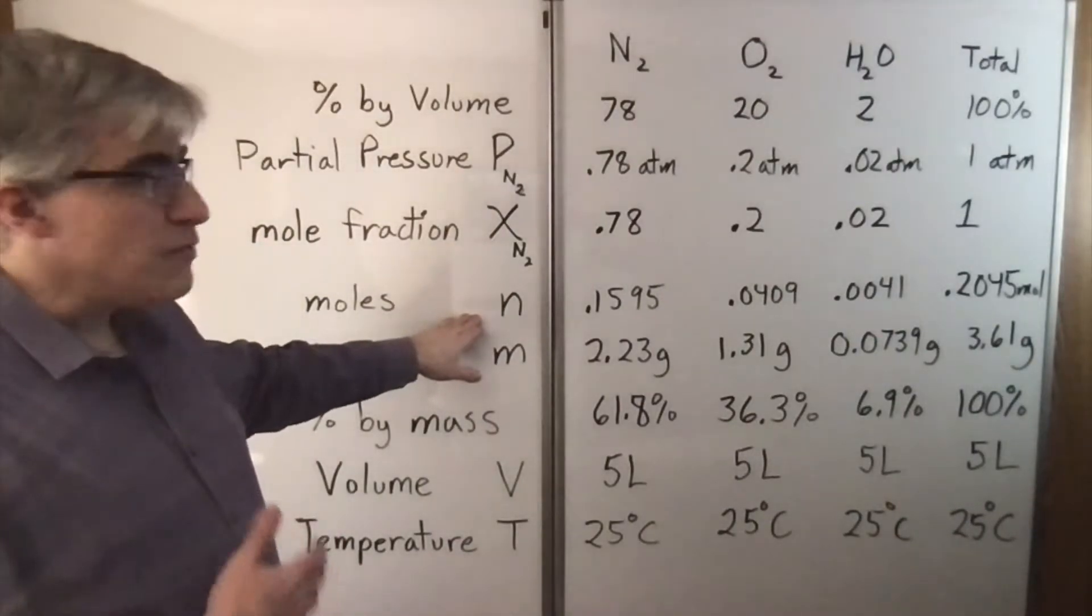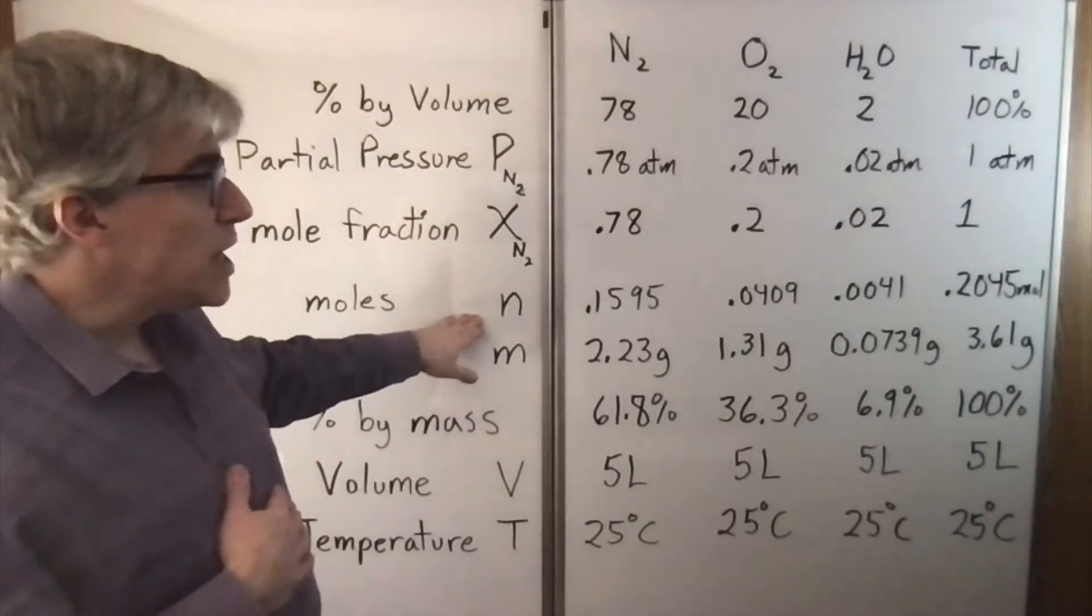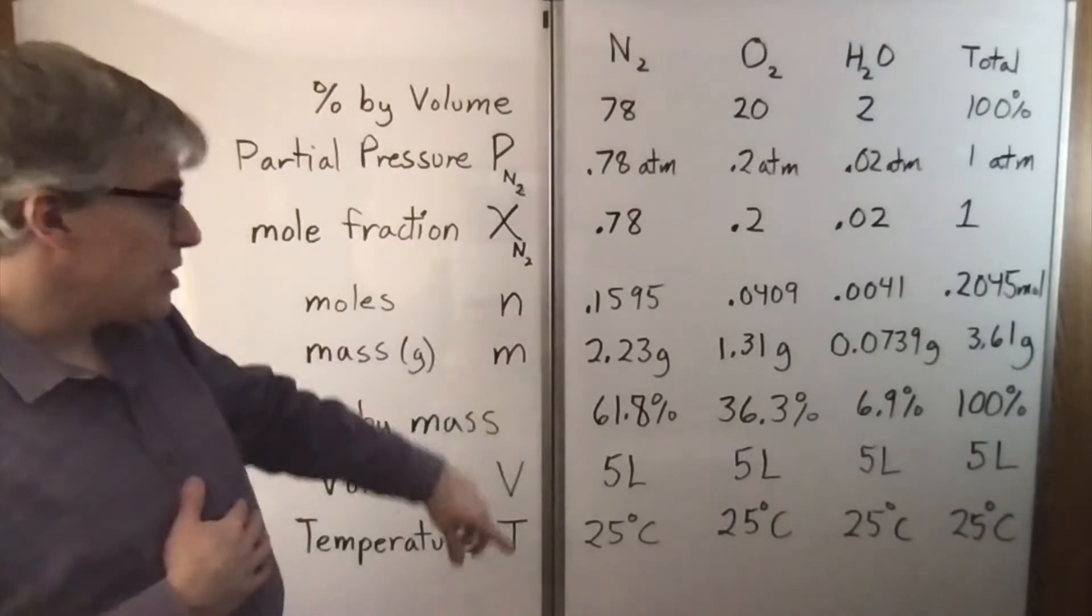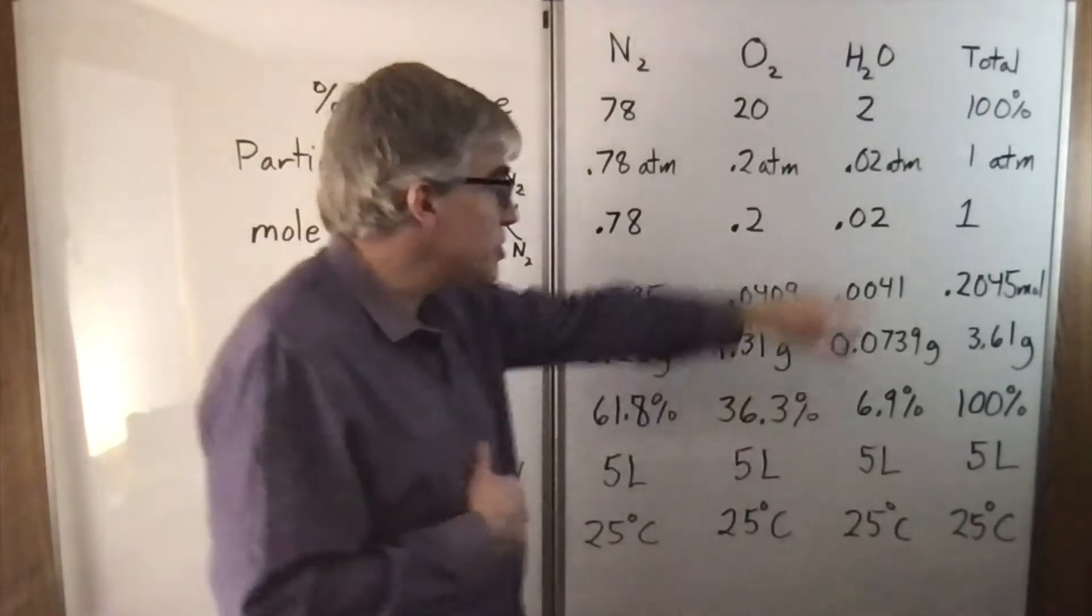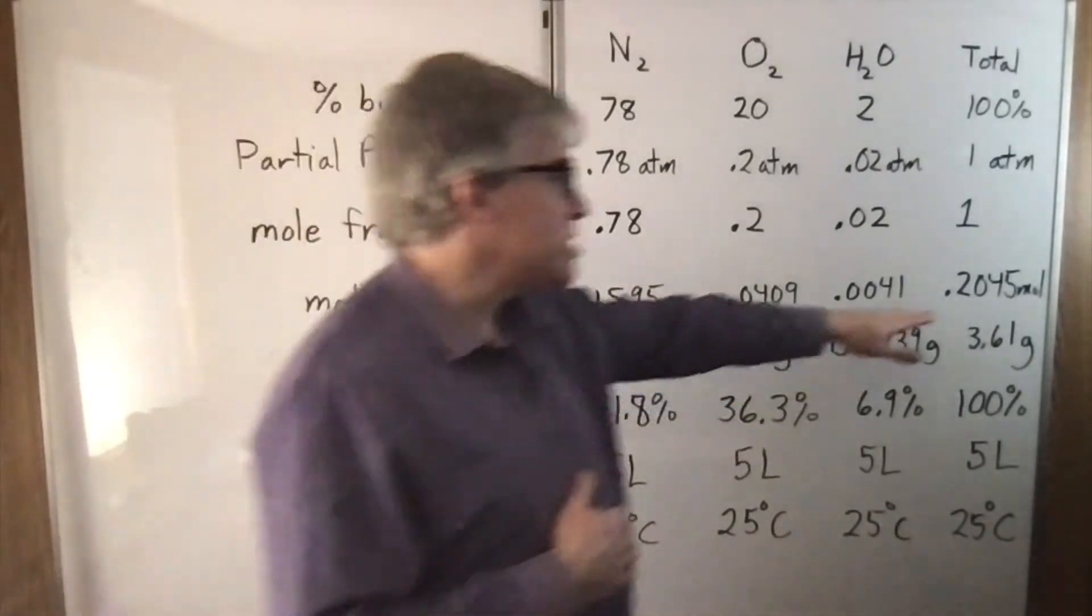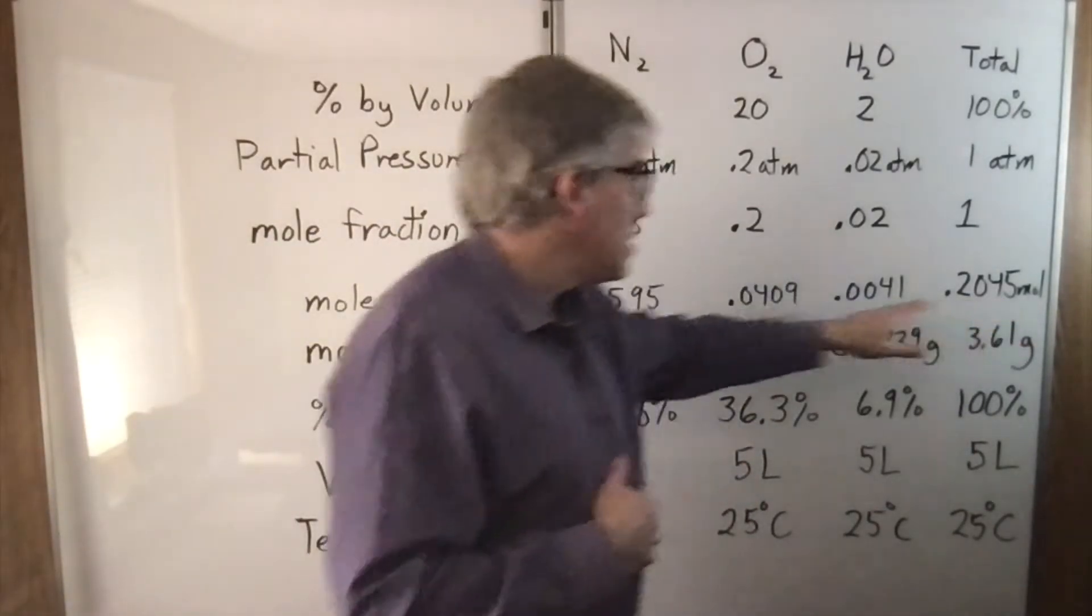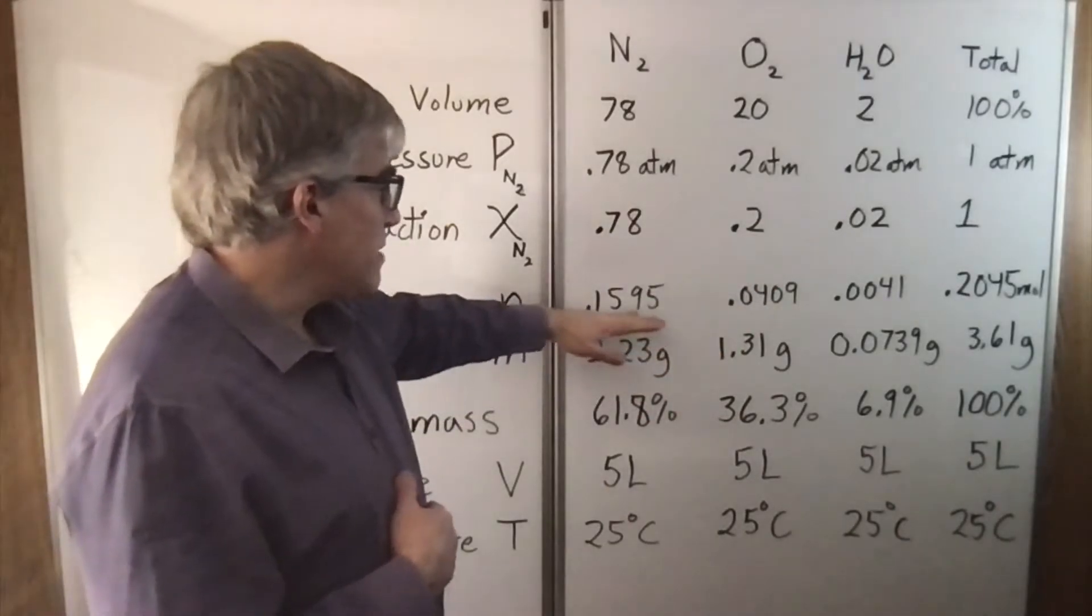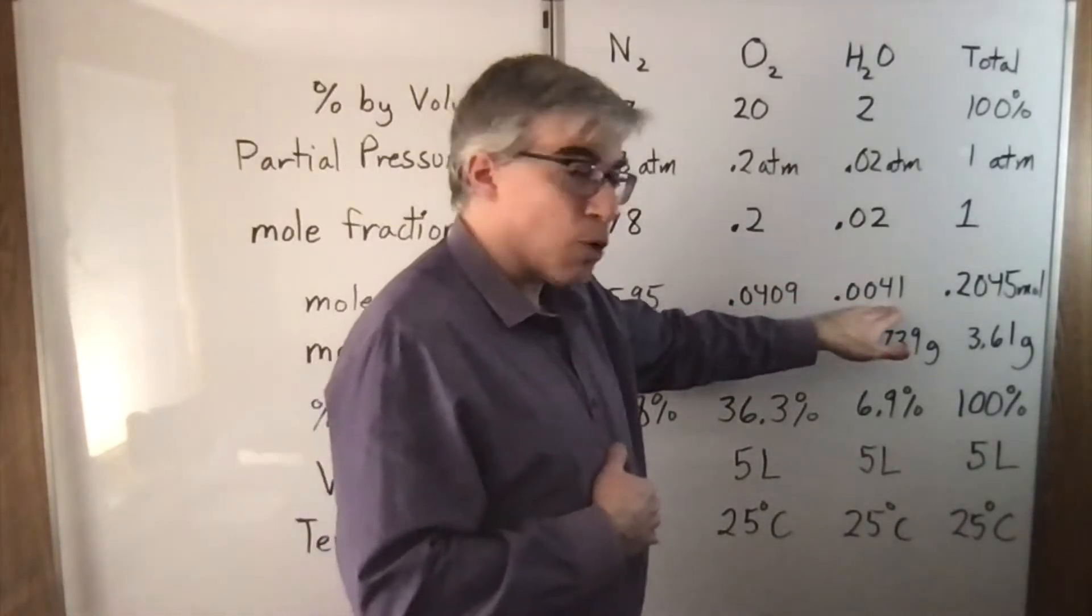to find the moles, we can find the total moles by doing PV equals nRT with the volume, the temperature, and the one atmosphere. To find the total moles is 0.2045. Doing those percentages, we get these many moles of nitrogen, oxygen, and water.